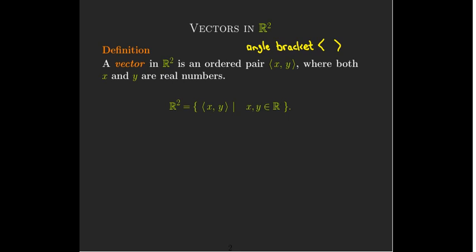And it's an ordered pair, meaning the order obviously matters. 1, 2 will be different from 2, 1. And x and y have to be real numbers.